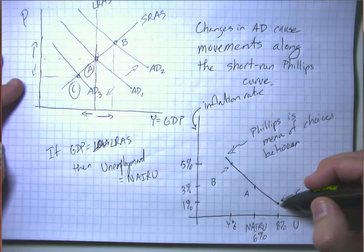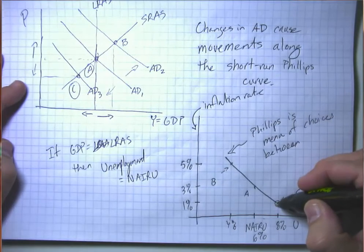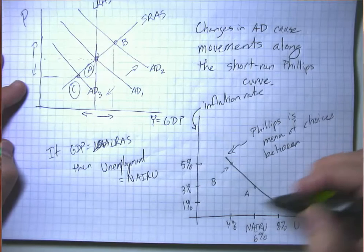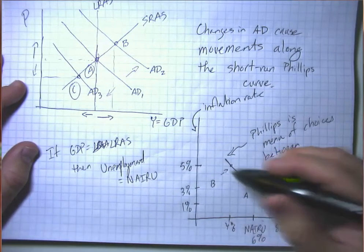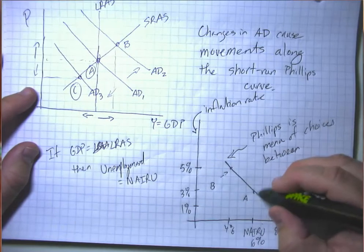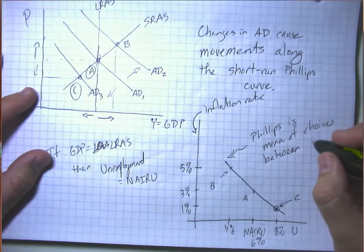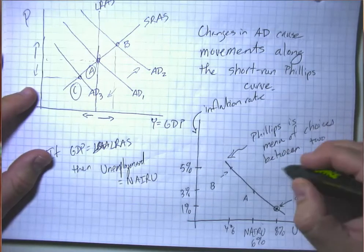We can either choose to be in a situation where we have high unemployment but low inflation, or the reverse, low unemployment and high inflation, or we can choose to be in the middle here. So it's a menu of choices between two problems.